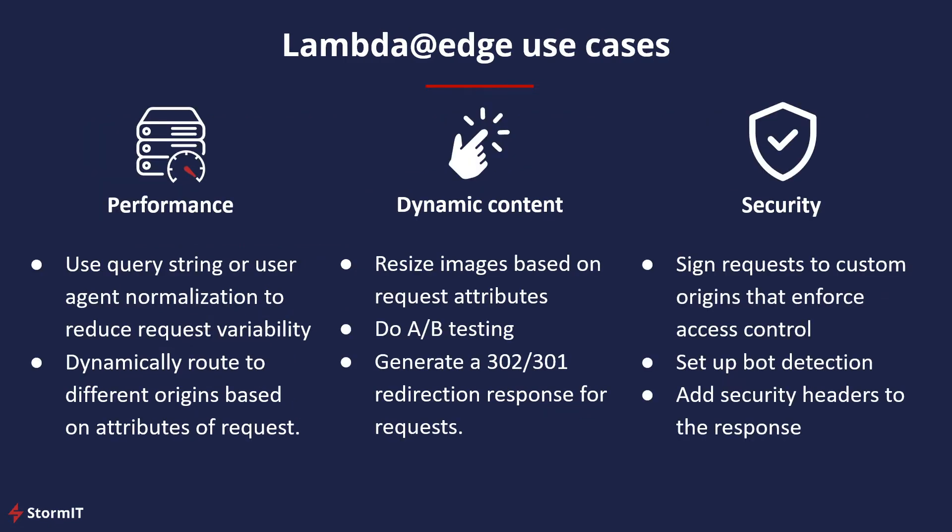Lambda at Edge use cases: One of the biggest benefits is improving cache hit rates, either by increasing the likelihood that content will be cached when returned from the origin or by increasing the availability of content already in cache. The second use case is dynamic content — for things like images and redirections, you can dynamically generate content based on requests or responses.